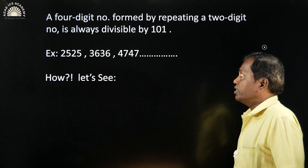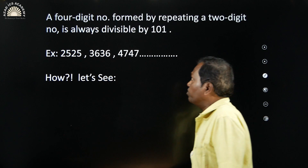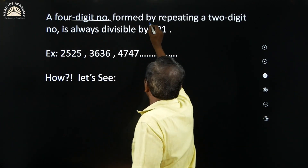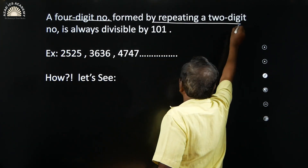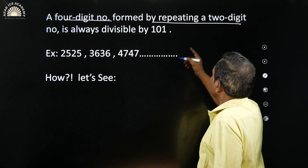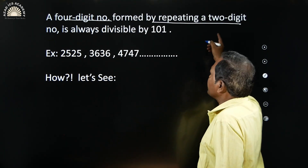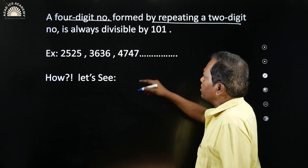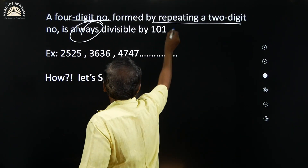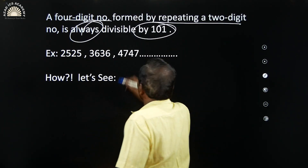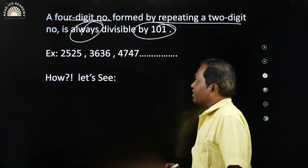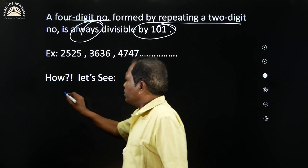See the question here: a 4-digit number formed by repeating a 2-digit number is always divisible by 101.